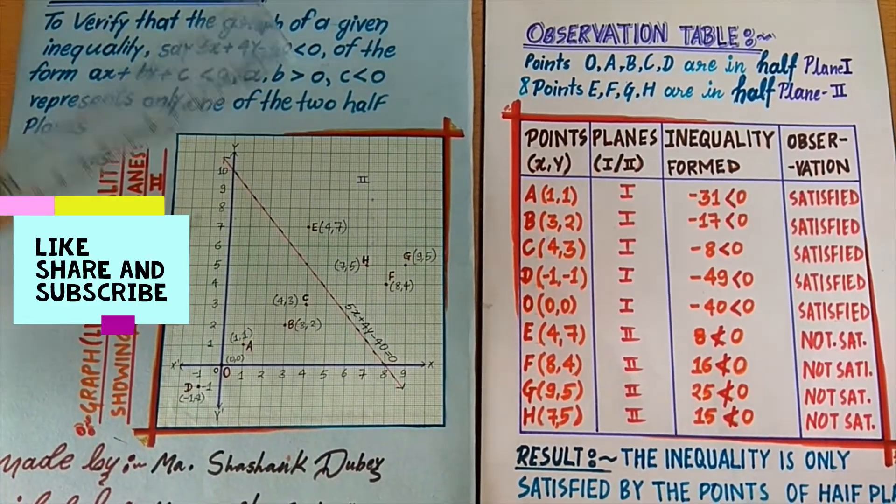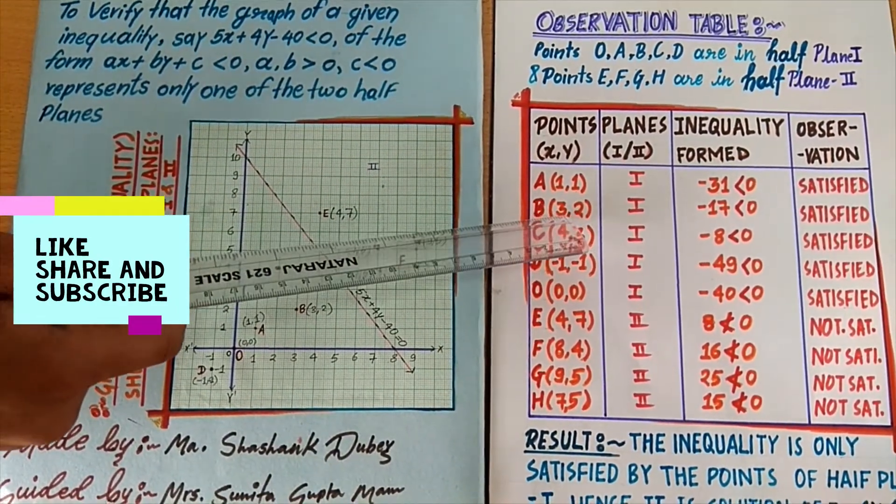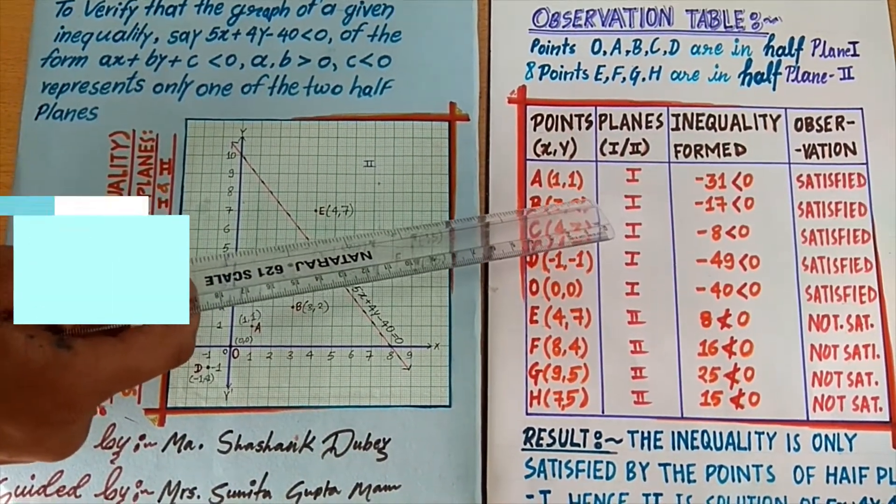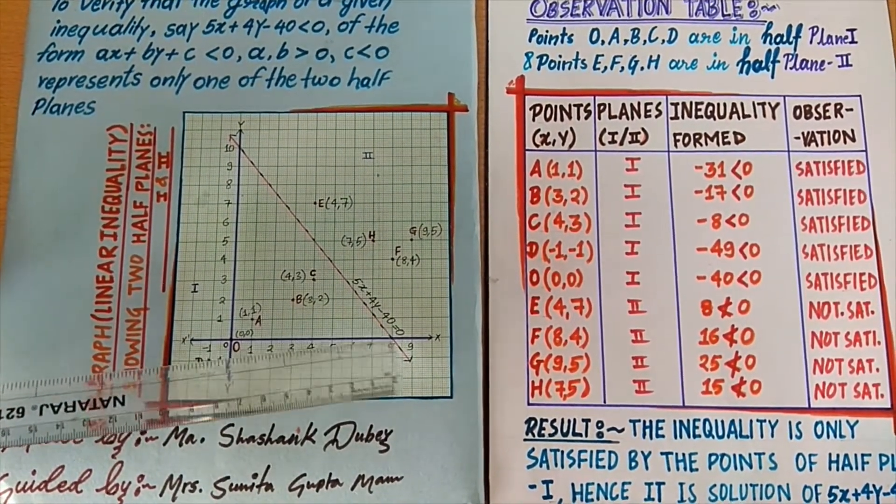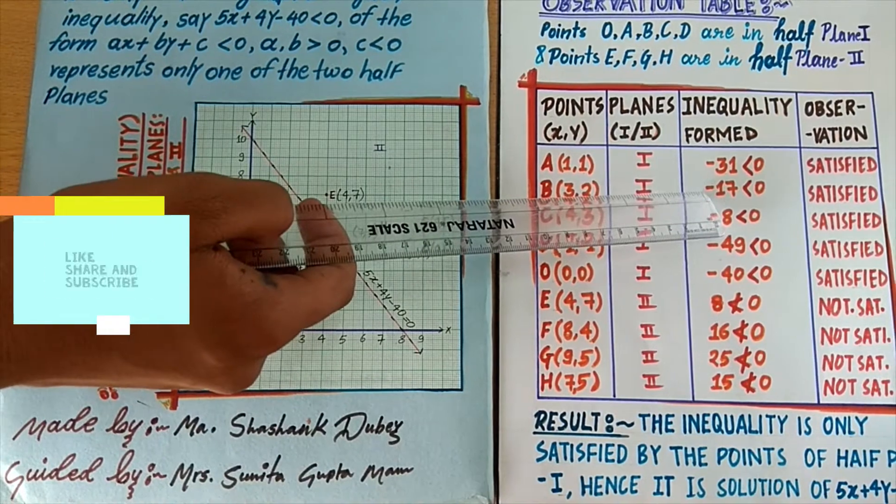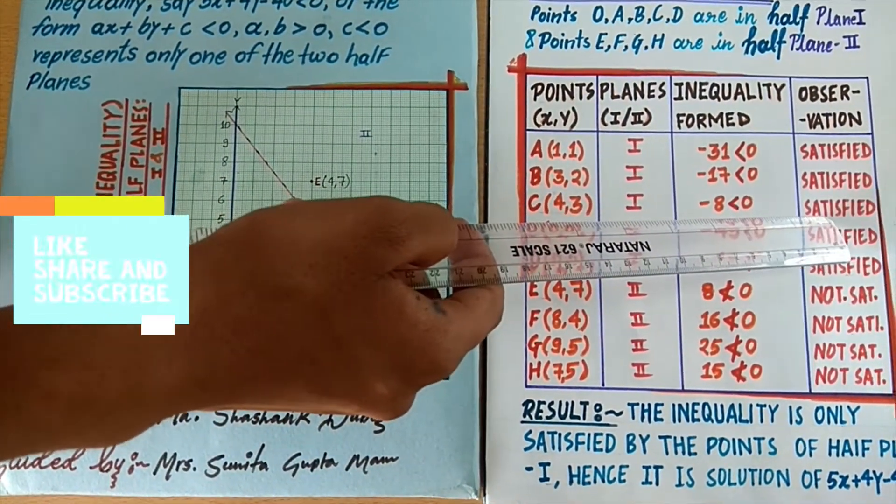Similarly, if we take point B with coordinates 3 and 2 and put their coordinates as x and y in the given inequality, the inequality formed is minus 23 which is less than 0, hence it also satisfies the given inequality.